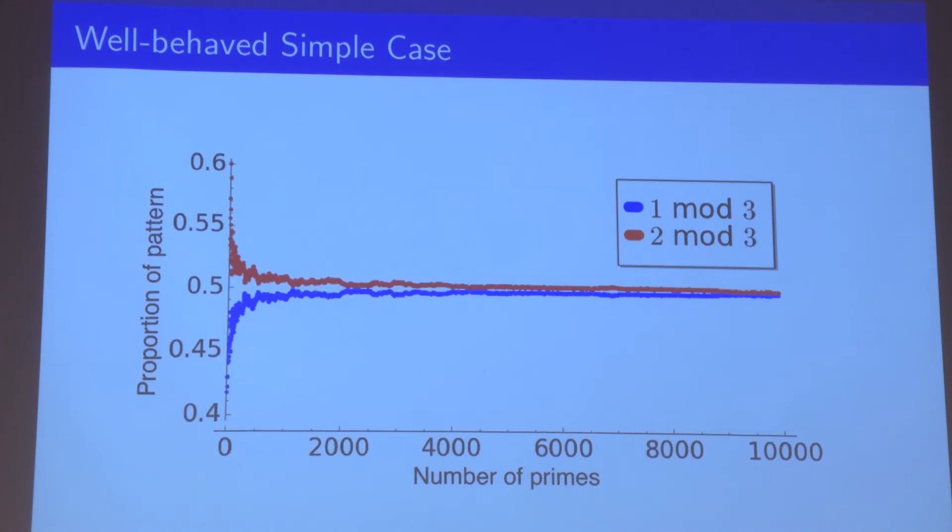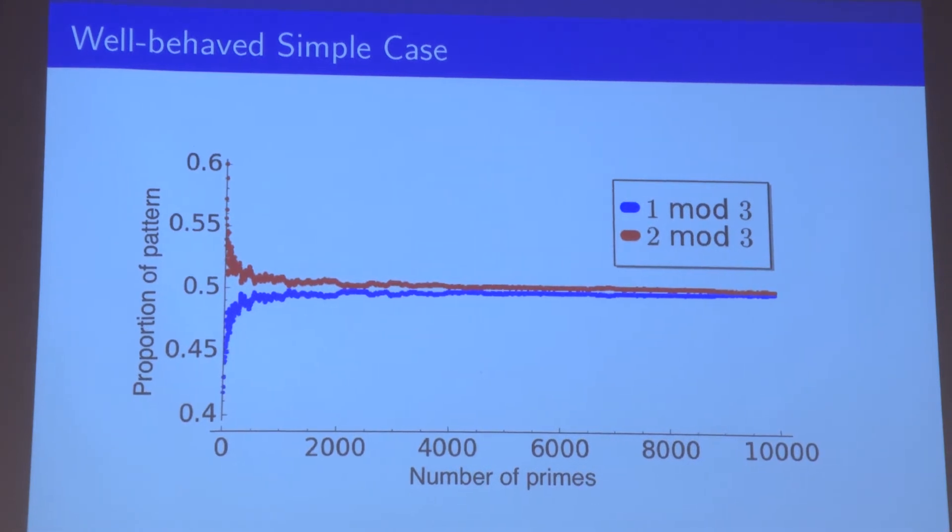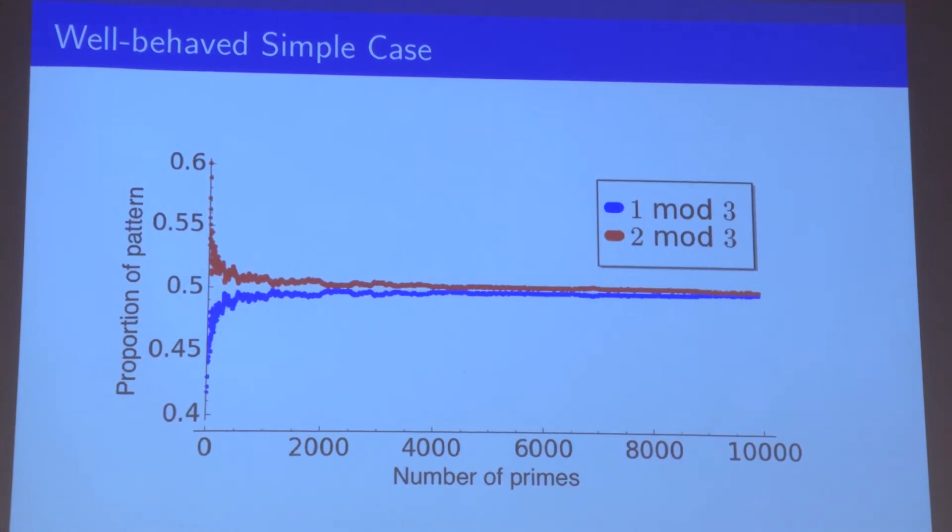Here, the blue data is the proportion that leave a remainder of one, and the red data is the proportion that leaves a remainder of two. As you can see, the two trend lines seem to converge pretty rapidly to 50-50, which is pretty reassuring.